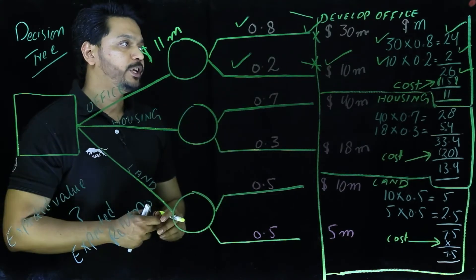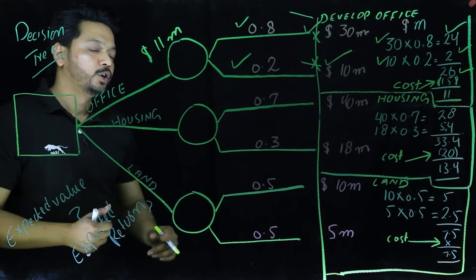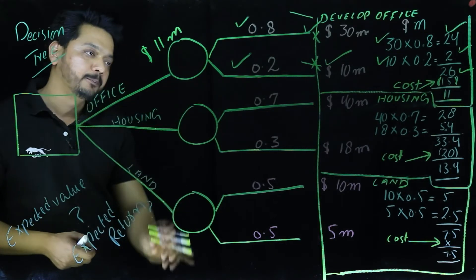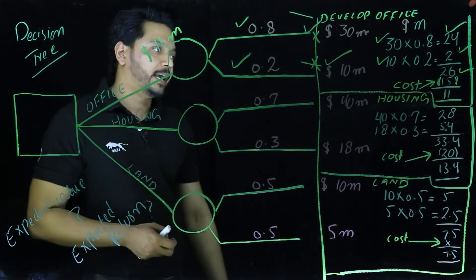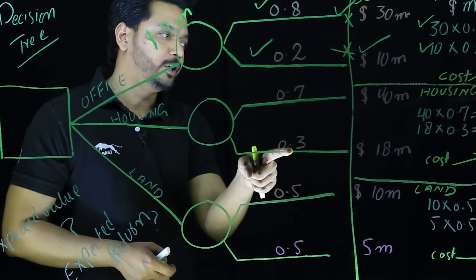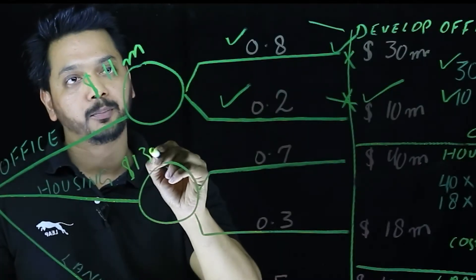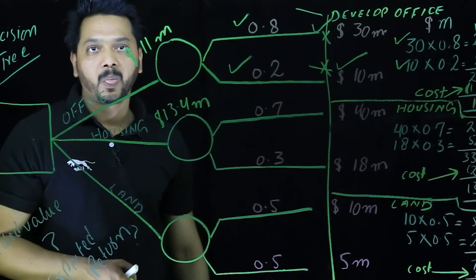Now we need to see where we stand when it comes to the other options. When it comes to the option of housing scheme, the probability of success is 70% and the probability of failure is 30% here, which will give us with the same method $13.4 million.